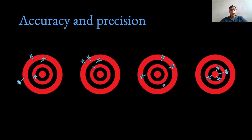Now accuracy and precision are not the same. To get a clear understanding of what accuracy and precision mean and how they differ, we will take the help of this example of darts on a dart board. Accuracy is the inverse of error — it is the difference between the observed values and the expected value. So the less the difference, the more accurate your research or your test is.